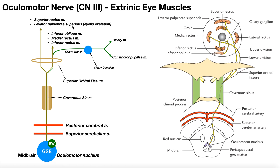It doesn't seem like a very important muscle to talk about, but when you start doing a cranial nerve examination, if you see a drooping eyelid, that is an indicator that you might actually have some dysfunction with cranial nerve 3. It could be an intrinsic problem with this nerve, or it could also be a problem with the midbrain — for example, an arterial insufficiency of the midbrain. So this is an important muscle to actually know.